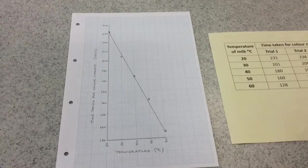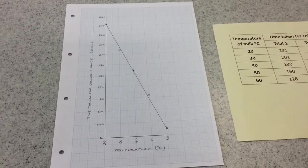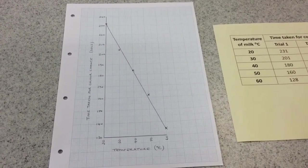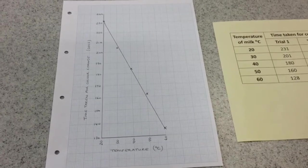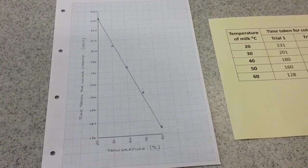And you'll see that as the temperature increases, the time taken for the color change to yellow decreases. Therefore, our rate of decay is much faster at higher temperatures.